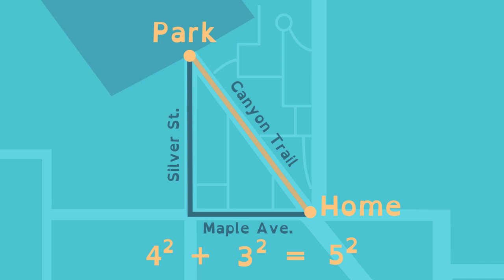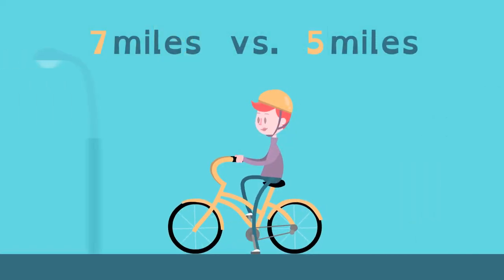So the hypotenuse, the length of Canyon Trail, is 5 miles. 2 miles less of biking for Lucy.